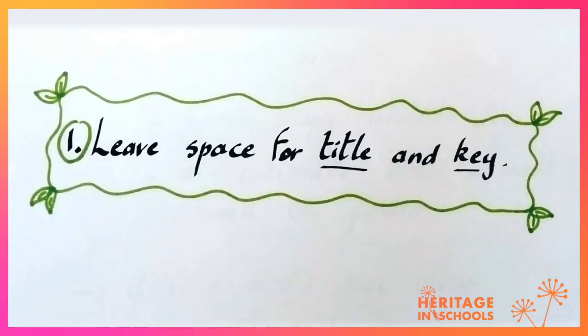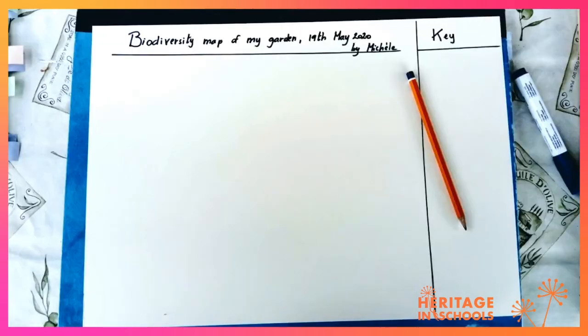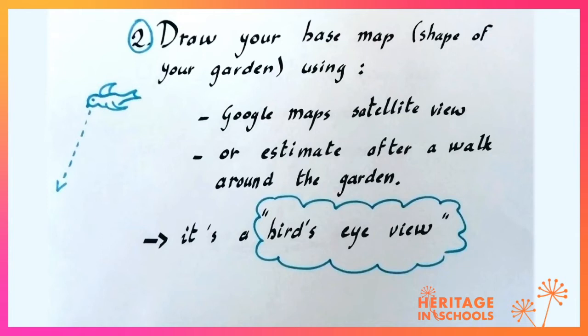Firstly you want to leave space for a title at the top and a key to the right of your map. Then you will draw your base map — that's the shape of your site or your garden. You can use Google Maps or go for a walk around the garden and draw the shape of it.